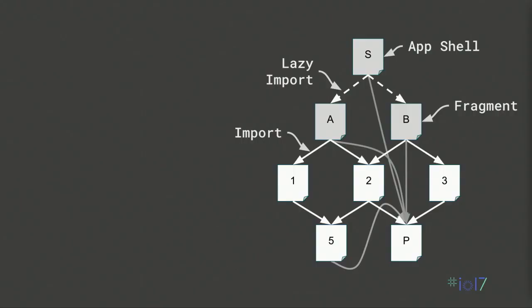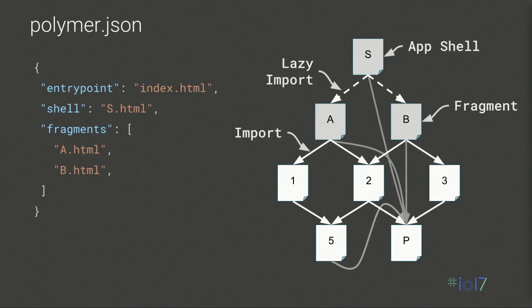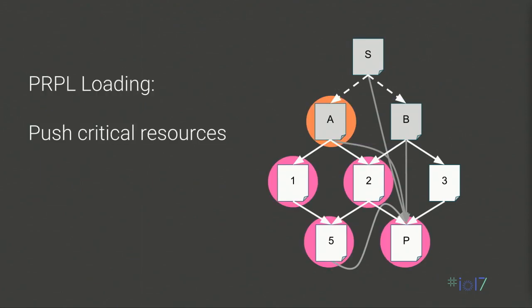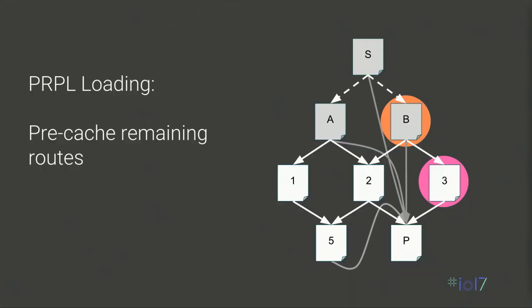If we put all of these concepts together, we can look at an example app structure. Here we have the app shell at top, which lazily imports a couple of views, which then import the rest of their dependencies. Some of our tools need to understand this structure, so we let you describe it simply in a file called polymer.json, with fields for the entry point, the shell, and the fragments. With purple loading, when a user visits a particular view, you want to push all of the resources that view depends on so they load as fast as possible, and then in the background pre-cache the remaining views and their dependencies.